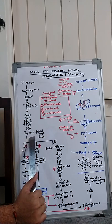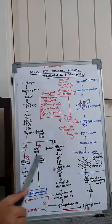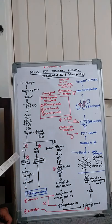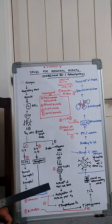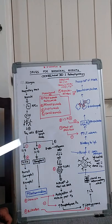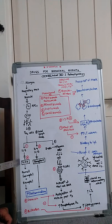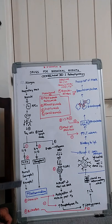This leads to activation of T helper 2 cells. T helper 2 cells perform the following functions: first, they release interleukins that play a great role in bronchial asthma. Interleukin-5 is released — it binds to the IL-5 receptor and ultimately recruits eosinophils and basophils.